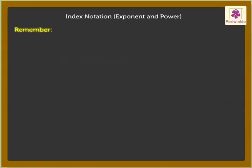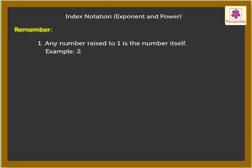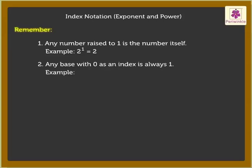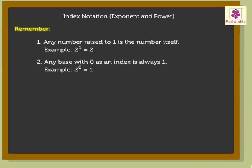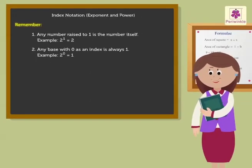Remember: 1. 2 raised to the Power of 1 is equal to 2. 2. Any base with 0 as an index is always 1. For example, 2 raised to the Power of 0 is equal to 1. Wasn't it easy learning index notation?